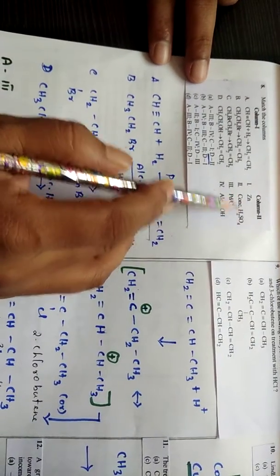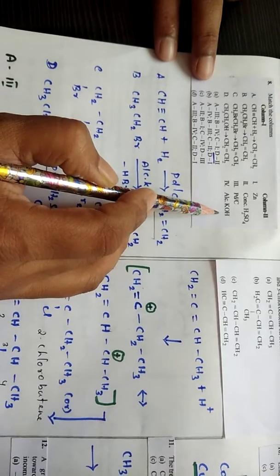Here zinc, concentrated sulfuric acid, palladium bicarbonate, alcoholic KOH like that.